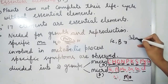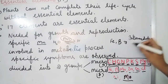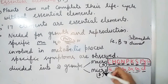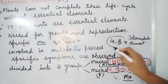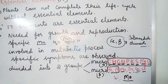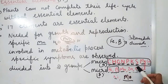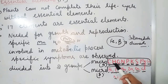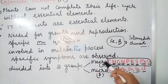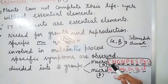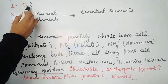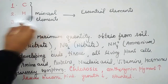Iron and Boron are sometimes called Intermediate Elements. Regarding mineral elements, Carbon, Hydrogen, and Oxygen do not fall in the category of mineral elements.